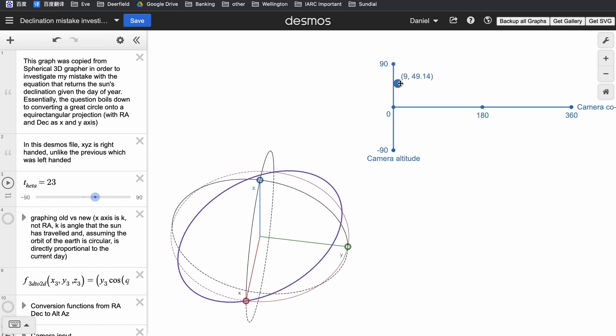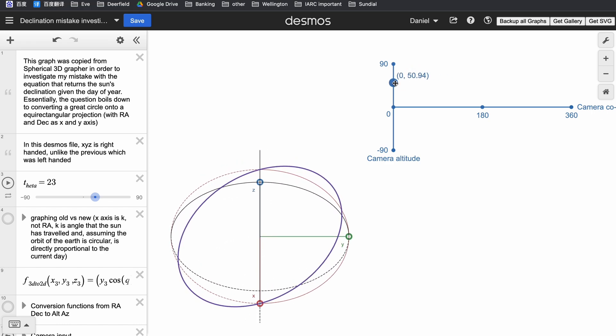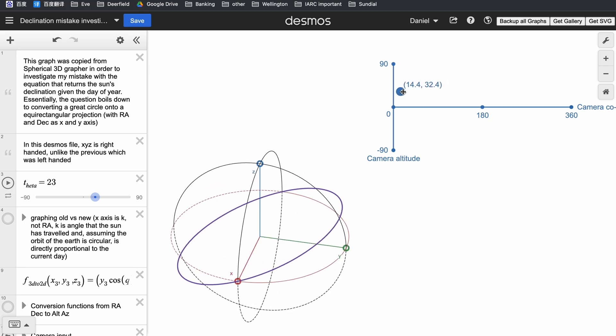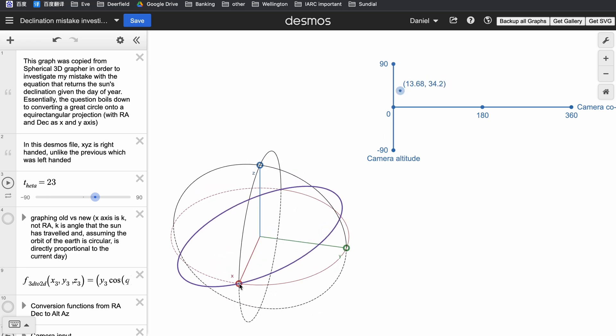So one assumption we have to make is that the orbit of the earth around the sun is perfectly circular. And that's not exactly true, but it's close enough for our purposes. And assuming that's the case, the sun will also appear to make a perfect circle around the sky. Even though the circle is tilted, the sun still moves a constant angle every day.